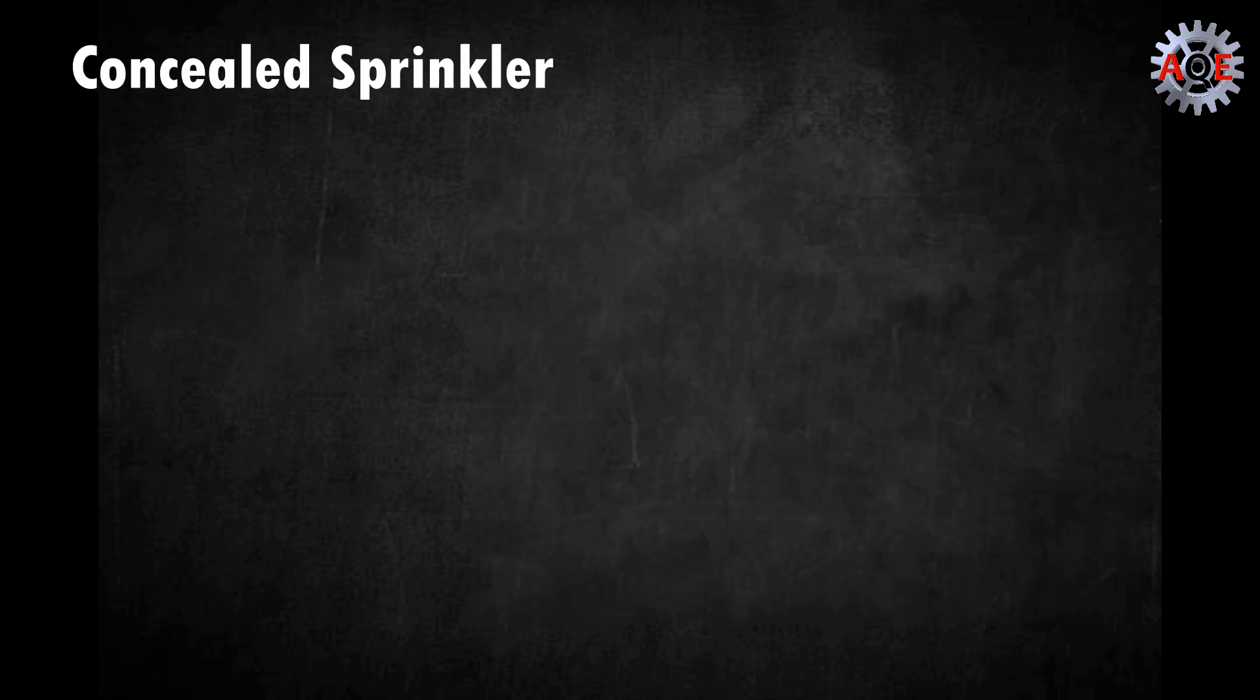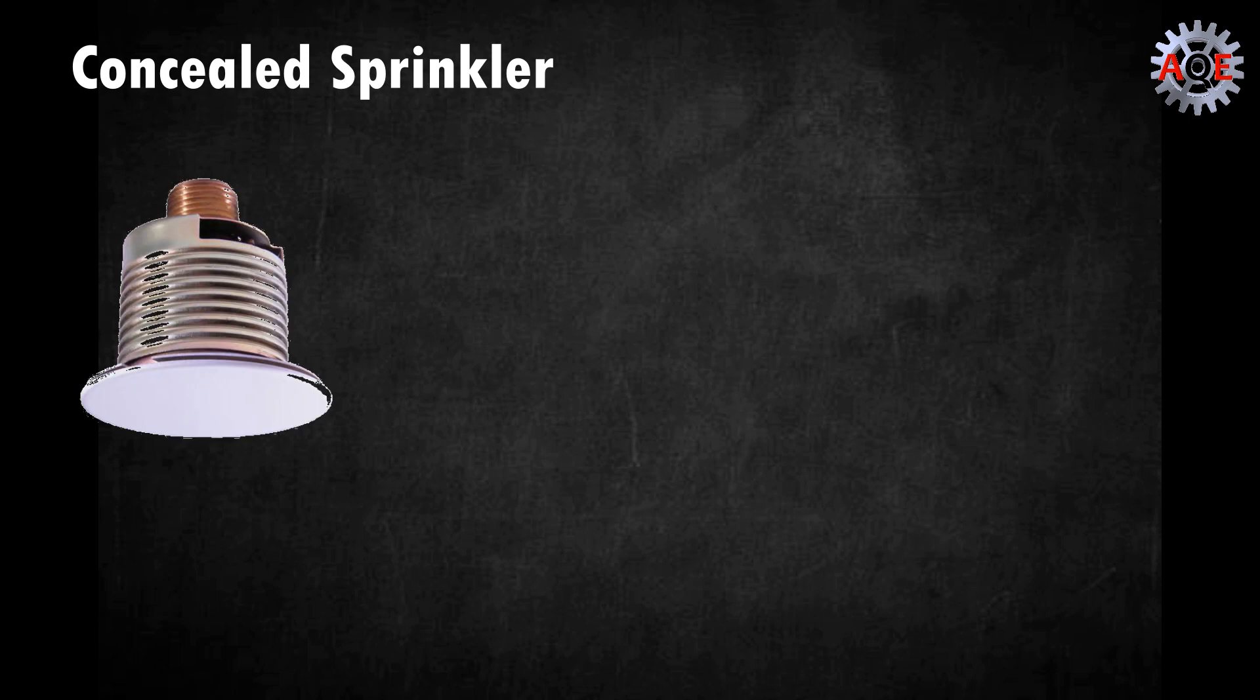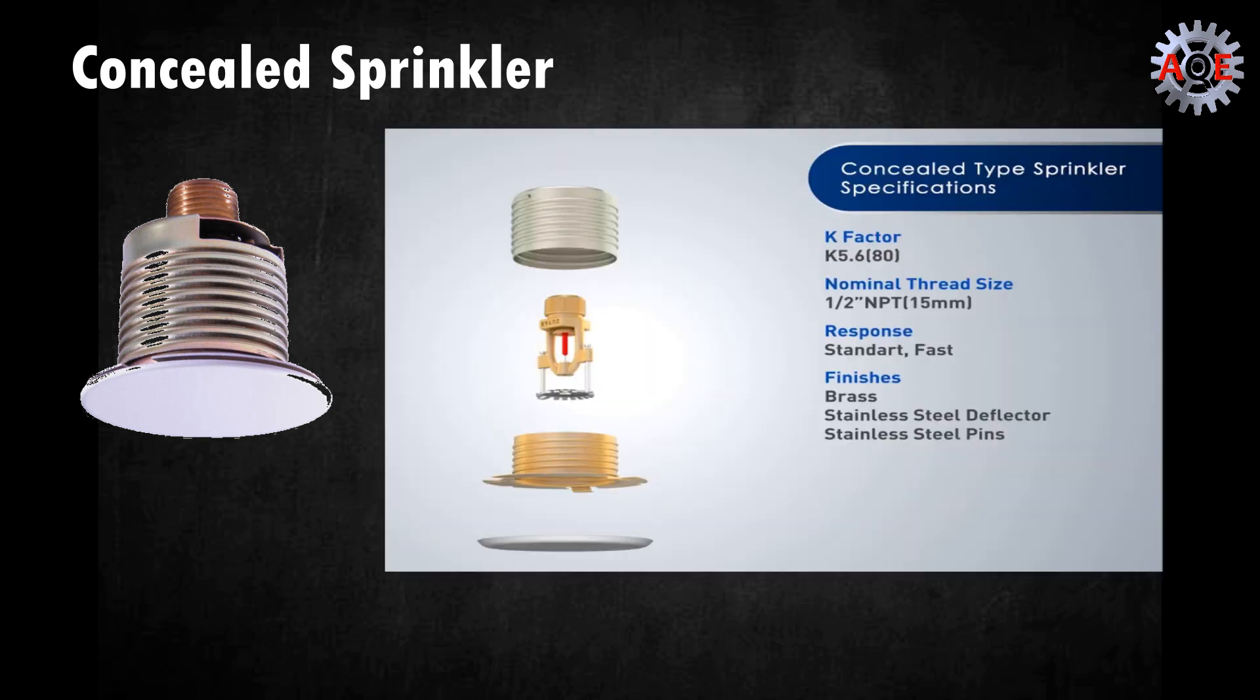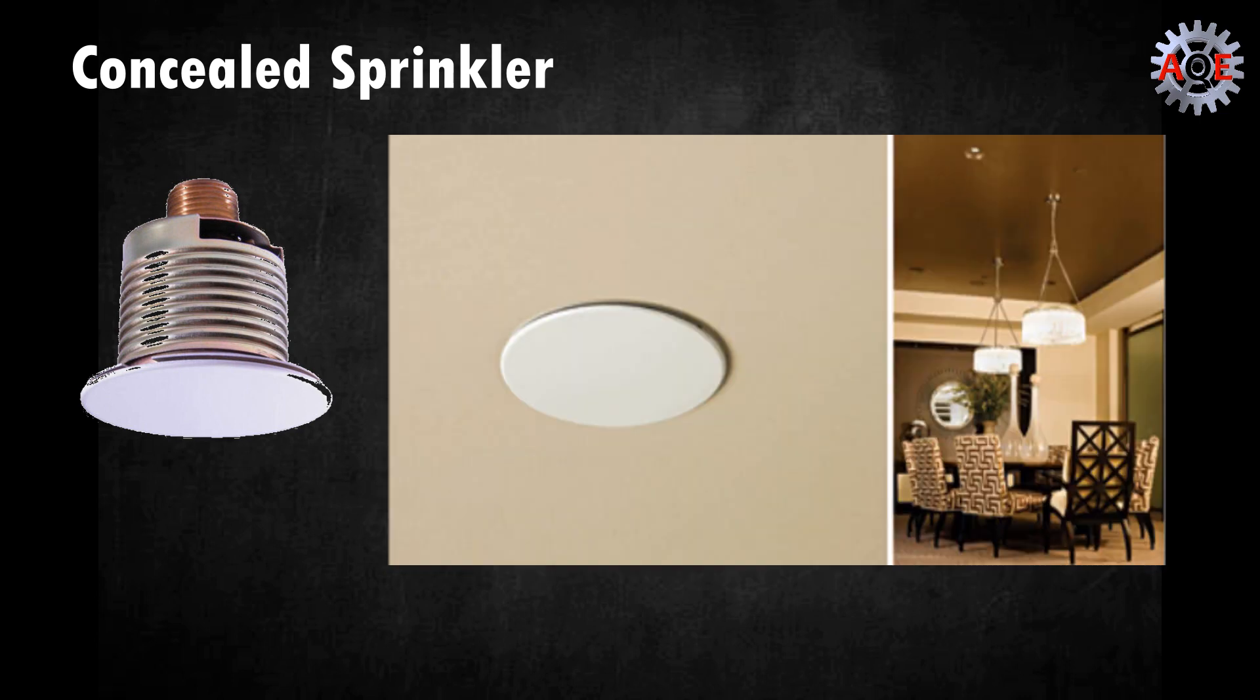A concealed fire sprinkler head is very similar to a pendant fire sprinkler head. However, the concealed head has a cover plate to help it better blend into the ceiling. The cover plate will fall off once the temperature is 20 degrees less than the fire sprinkler, which allows the sprinkler to activate once it's exposed to the heat of the fire.